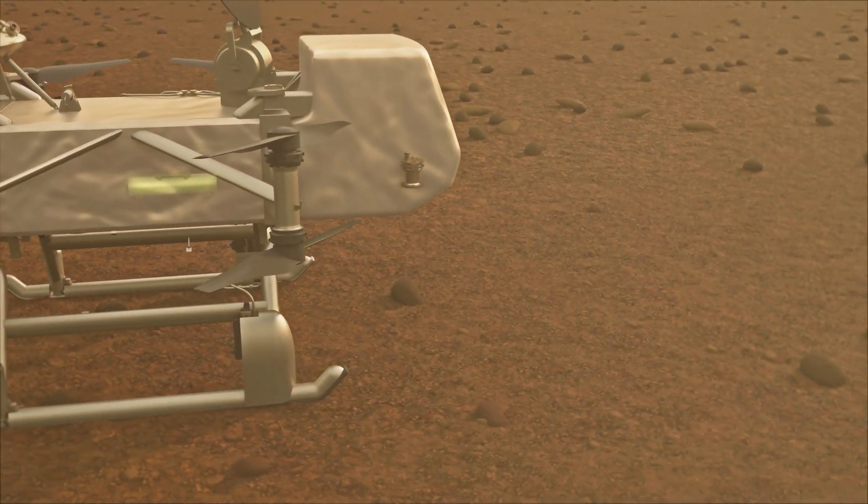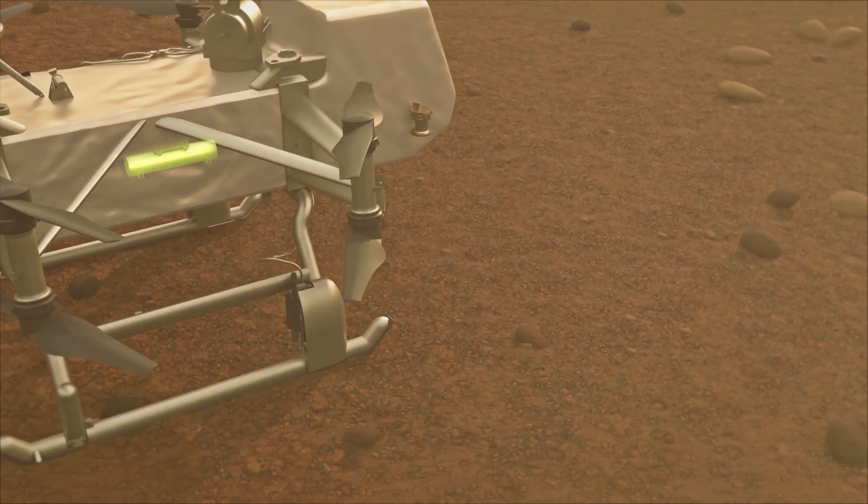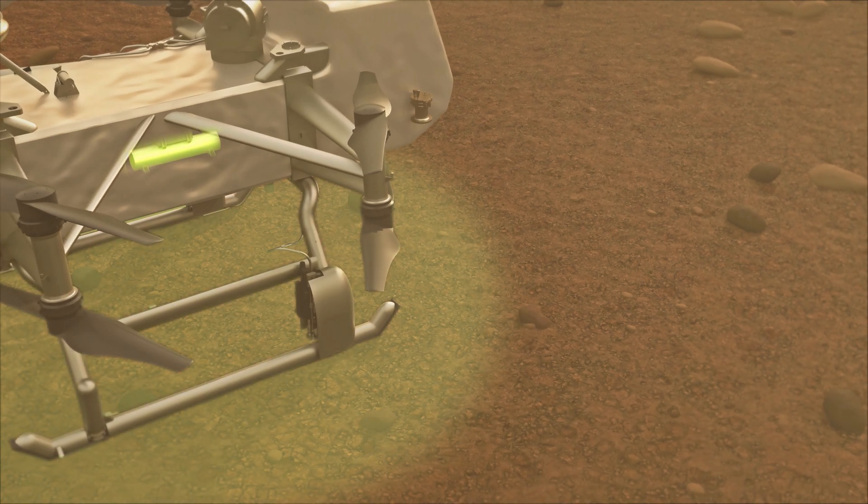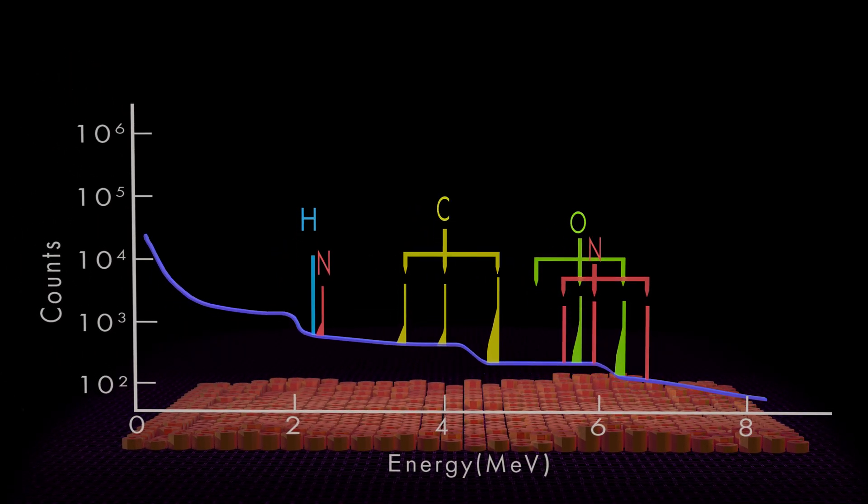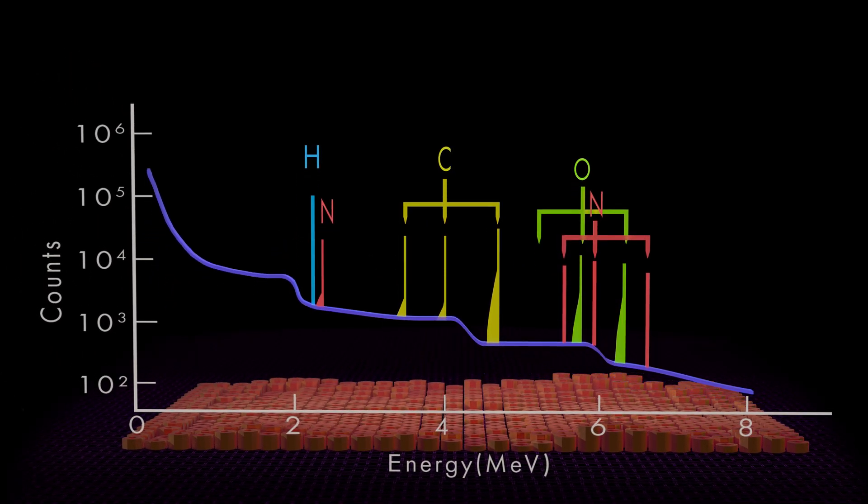At each new landing site on Titan's surface, Dragonfly uses a pulsed neutron generator and onboard gamma-ray sensor to detect key elements such as carbon and hydrogen in organic materials or oxygen in water ice.